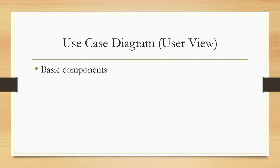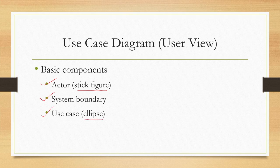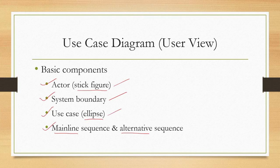To capture the interaction between user and system, we need certain components for the use case diagram. There is the actor component, represented with a stick figure. Then we have the system boundary. Then the use case, represented as an ellipse. And finally, the main line and alternative sequences. So the four primary components are: actor represented with a stick figure, system boundary, use case represented with an ellipse, and the concepts of mainline sequence and alternative sequence.